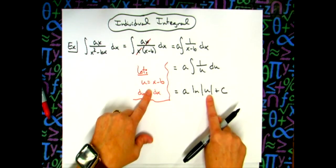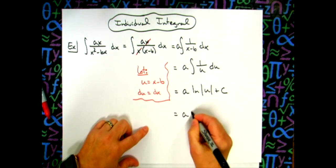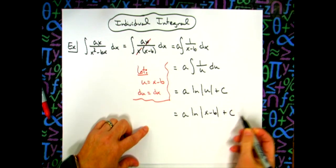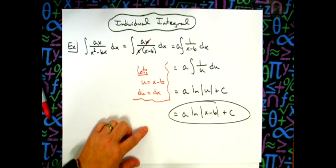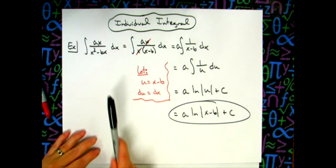The last step would be to replace my u, so I'll have a natural log absolute value x minus b, and then plus c. So basically, a straightforward u-substitution.